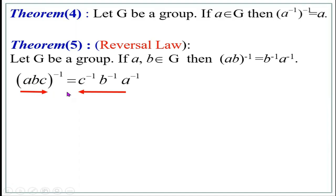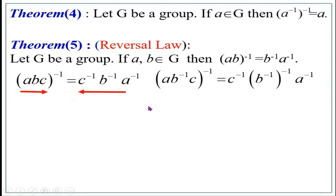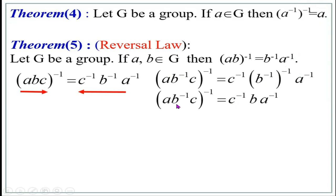In the reversal law, the elements A, B, C are reversed to C, B, A. For (A circle B inverse circle C) whole inverse: it equals C inverse, then B inverse-inverse, then A inverse. Since (B inverse) inverse equals B, this simplifies to C inverse circle B circle A inverse. Thus (A circle B inverse circle C) whole inverse equals C inverse circle B circle A inverse.